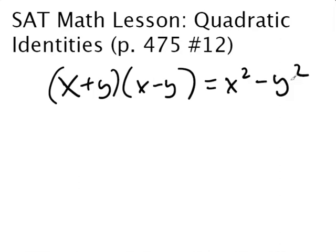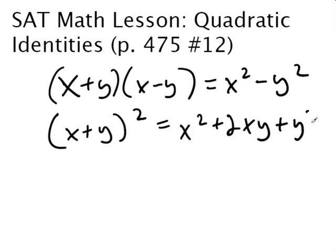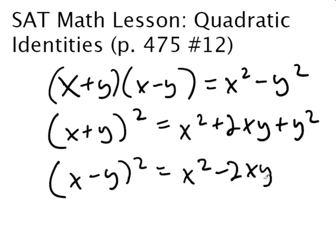x plus y times x minus y equals x squared minus y squared. x plus y squared equals x squared plus 2xy plus y squared. And then x minus y squared equals x squared minus 2xy plus y squared.